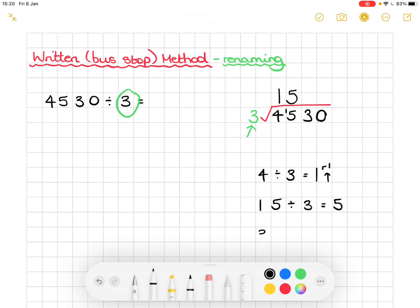So now, what is 3 divided by 3? We know that makes 1. 1 goes on top. Again, nothing to rename.